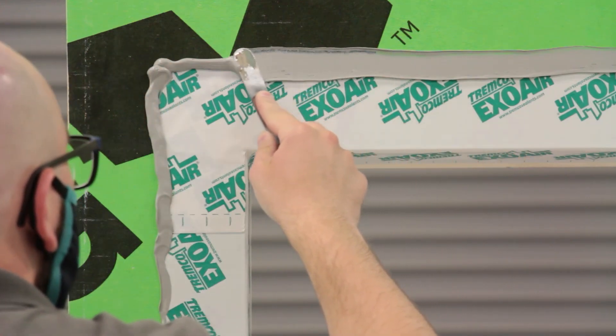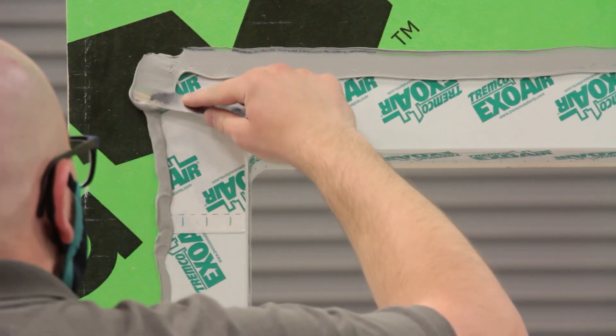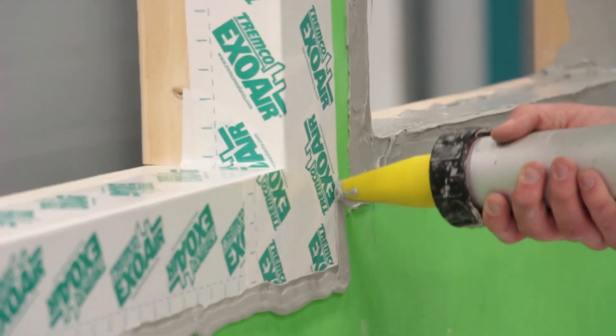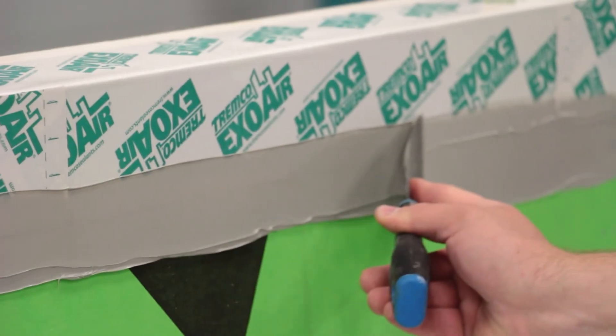If a fluid-applied ExoAir membrane will be applied over the ExoAir 110AT, then all edges of the ExoAir 110AT must be detailed with Dymonic 100.